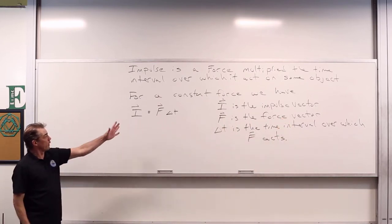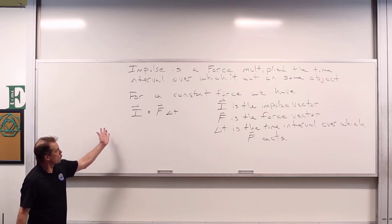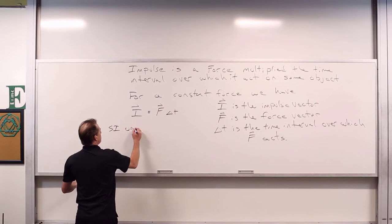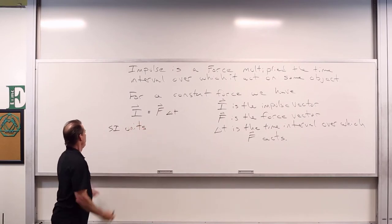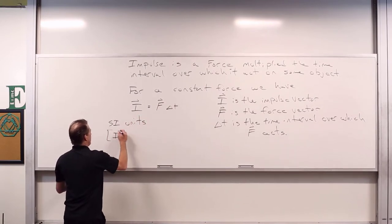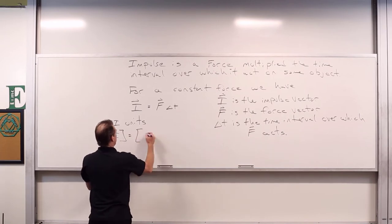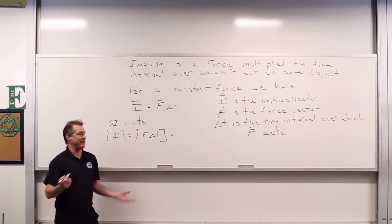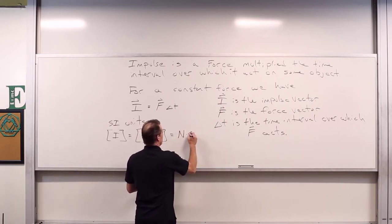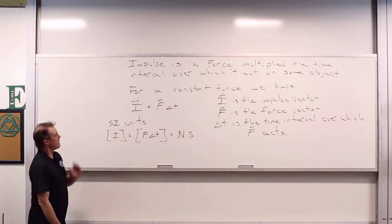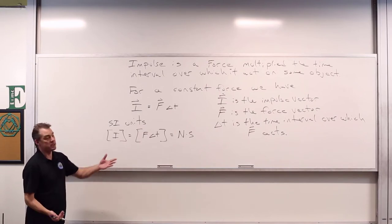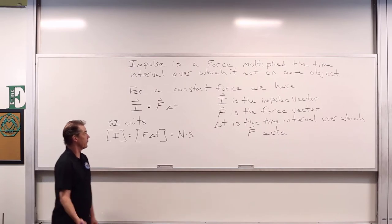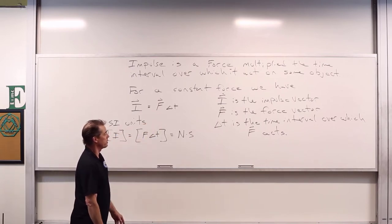The SI units of I have to be the units of F times ΔT, which is just newtons times seconds. The SI units of impulse are newton-seconds. It is a vector quantity with direction in the direction of the force under consideration.